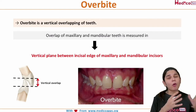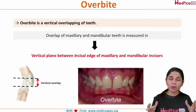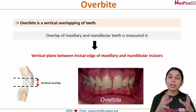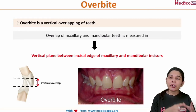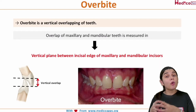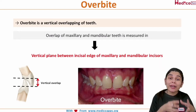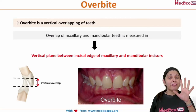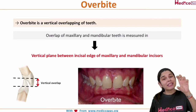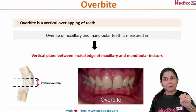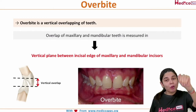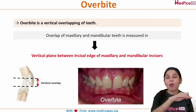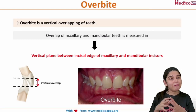I have already discussed overjet in a previous Short Dental Concepts video session. Overjet is the horizontal overlapping of the teeth, but here I am discussing overbite — overbite is when there is vertical overlapping of the teeth. When we are biting something, there will be more vertical overlapping.